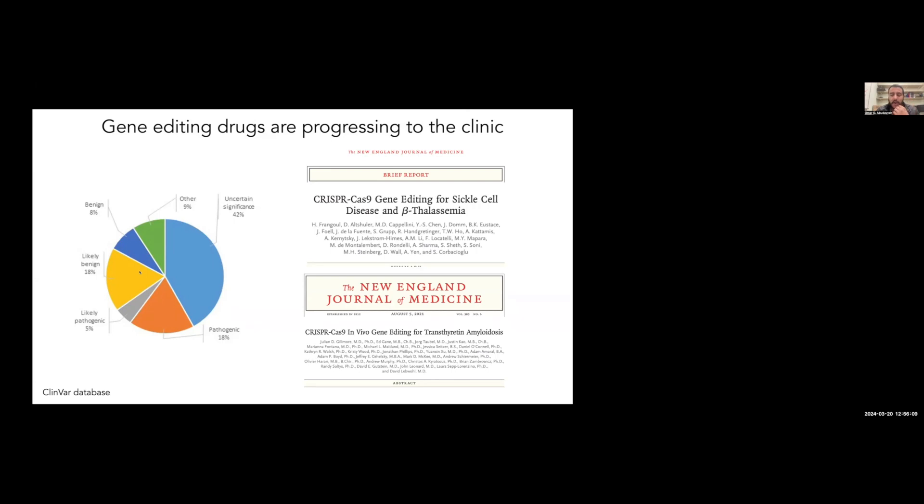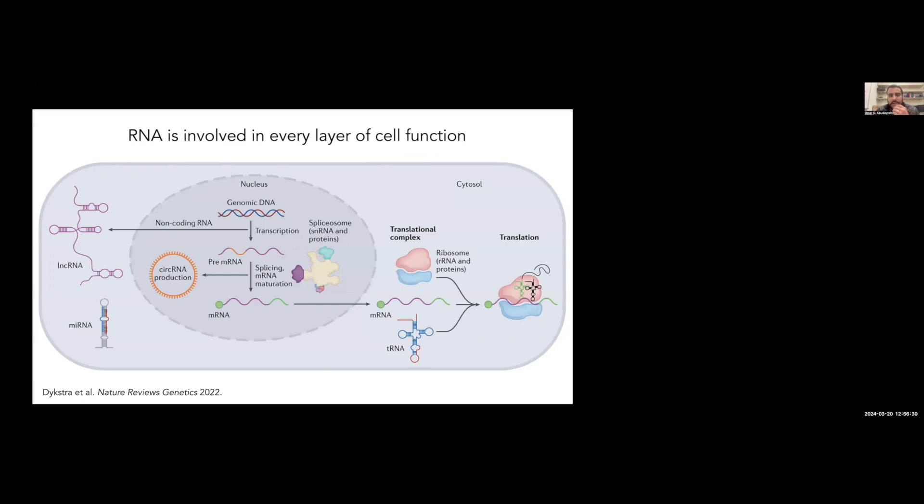That long tail of how we're actually going to build drugs for these remaining mutations really intrigues us. A lot of what we're thinking about is how can we start building technologies that allow us to more practically go after the 7,000 genetic diseases and not go mutation by mutation, using not just DNA editing and DNA targeting but also RNA editing and RNA writing technologies that could potentially solve these challenges and in some cases can actually be easier to deliver.